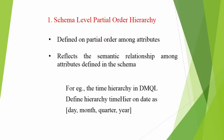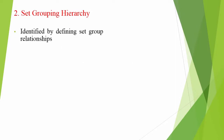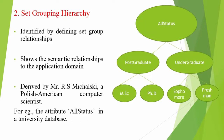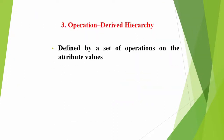Here, 'time higher' is the name of the hierarchy. Two: set grouping hierarchy. This is identified by defining set group relationships for a set of concepts or values of attributes. It shows the semantic relationships to the given application domain. Michaelsky derived this type of hierarchy. An example for this type of hierarchy is the status attribute in a university database. It can be described as: freshman, sophomore as undergraduate; MSc, PhD as postgraduate.